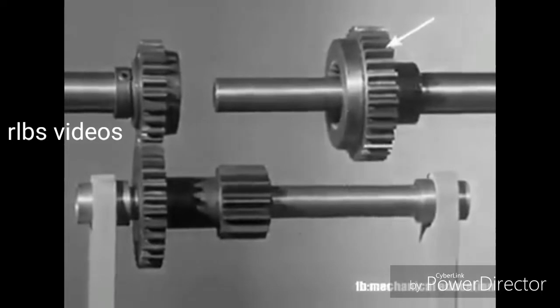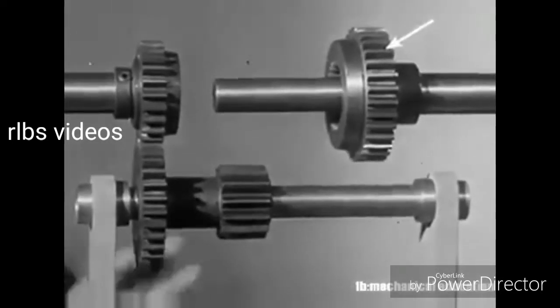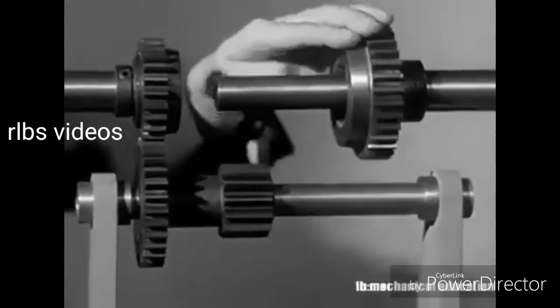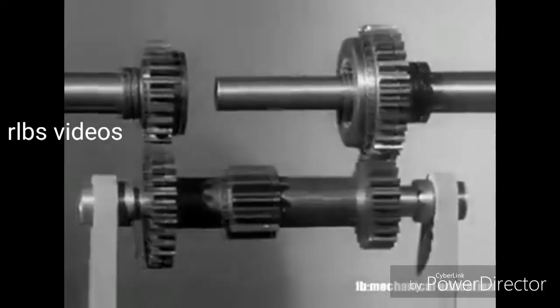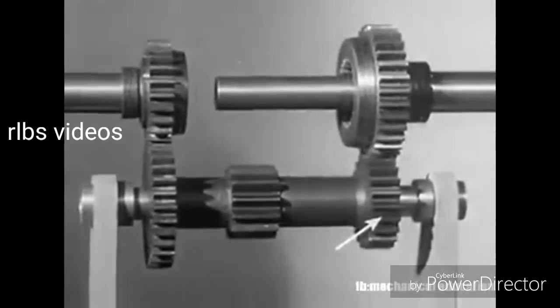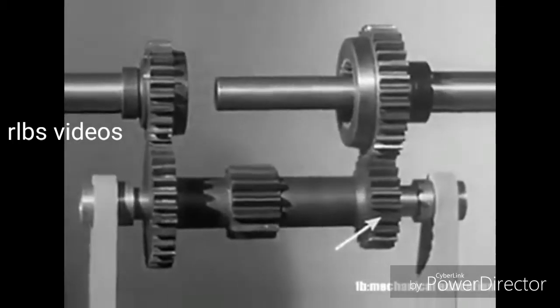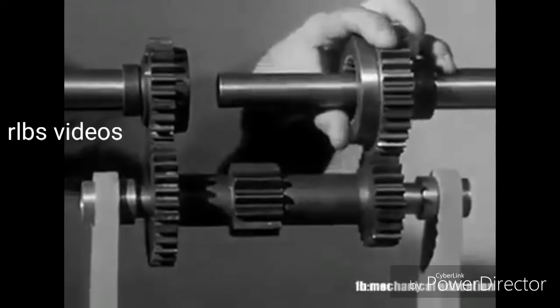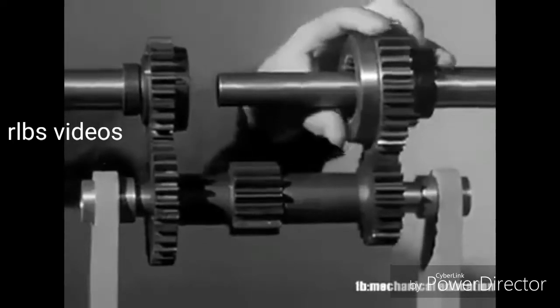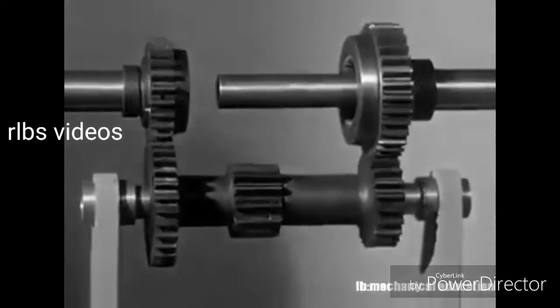This gear on the drive shaft going to the wheels is free to turn around the shaft. We'll put it in mesh with another gear on the counter shaft. These gears are always in mesh and keep turning while the engine is running.